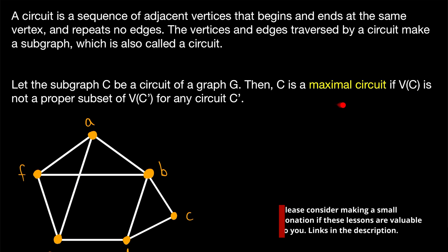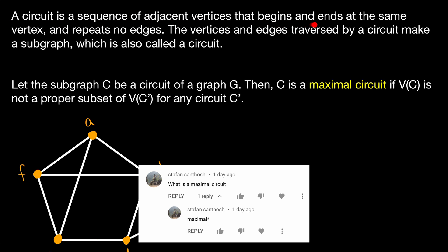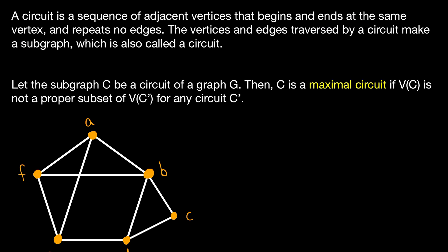Let's go over what a maximal circuit in a graph is. As a quick recap, a circuit is a sequence of adjacent vertices that begins and ends at the same vertex, so we might call it closed, and it repeats no edges — it can repeat vertices, but not edges. The vertices and edges traversed by a circuit make a subgraph, and that subgraph is also called a circuit, which is the subgraph type of circuit we're really talking about today.